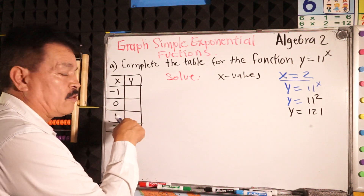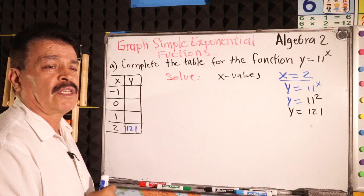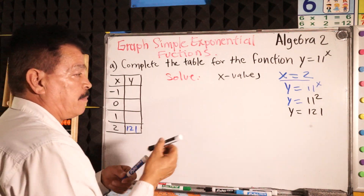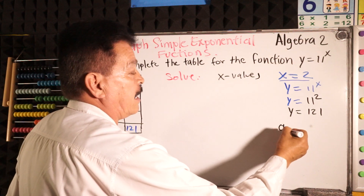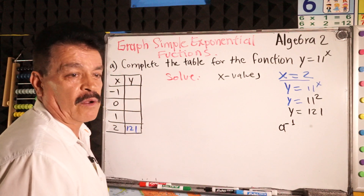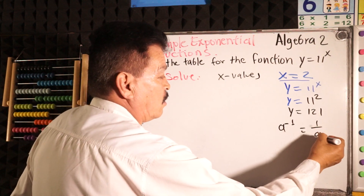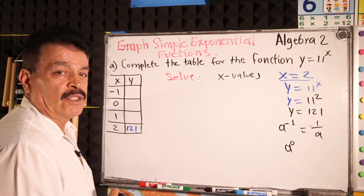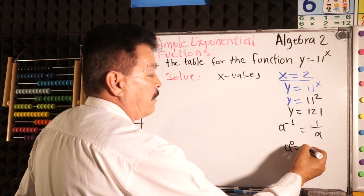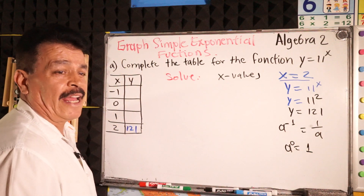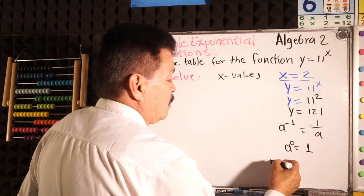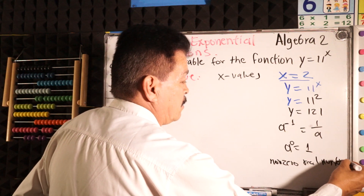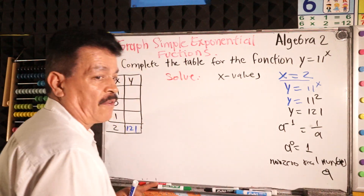Find the rest of the missing values in the same way. Remember some rules: for instance, 8 to the negative 1 equals 1 over 8. And also, 8 to the 0 power equals 1, for any non-zero real number.